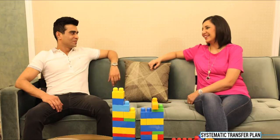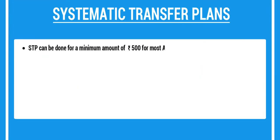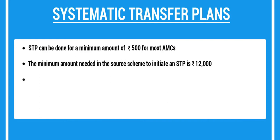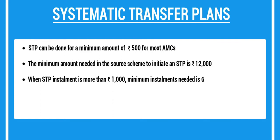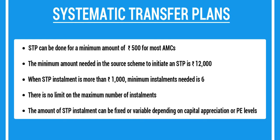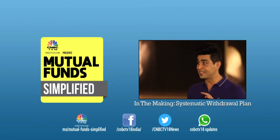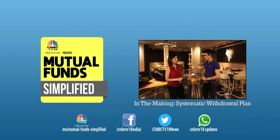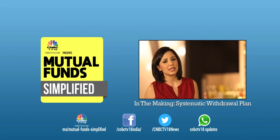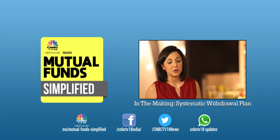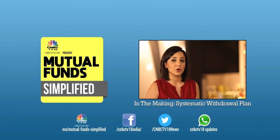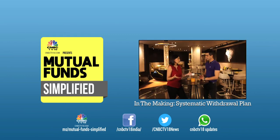Moving on to the systematic withdrawal plan — it can help a person get a second source of income when needed. A systematic withdrawal plan helps people decide the periodicity of their income. You can choose to withdraw only the gains you have made, or you can even choose to withdraw the principal amount as required.